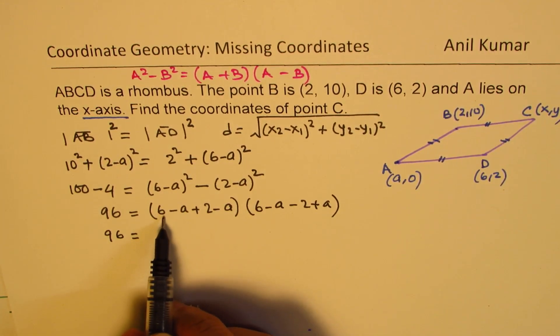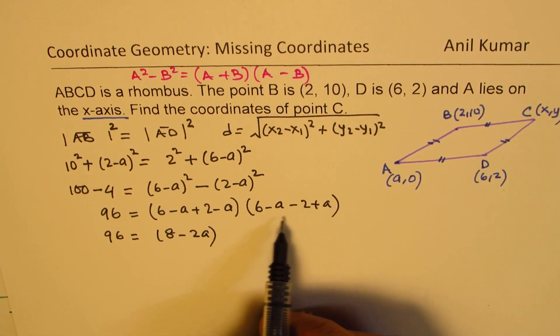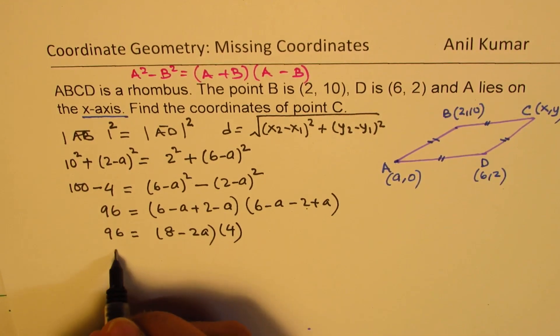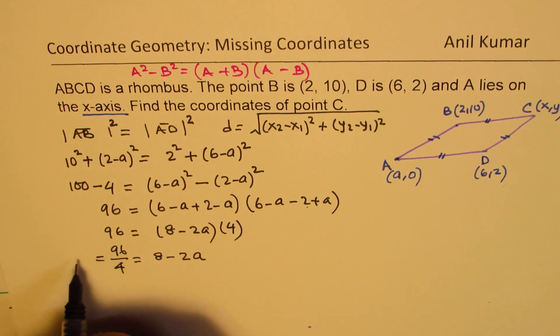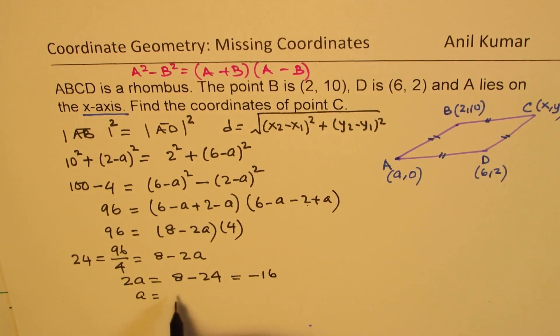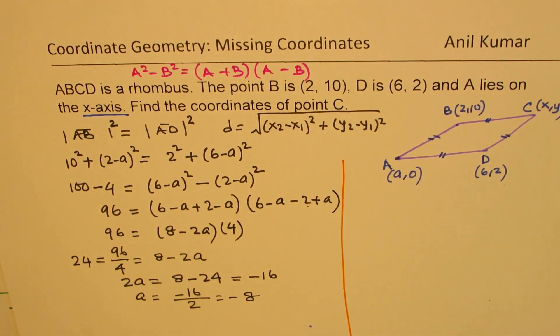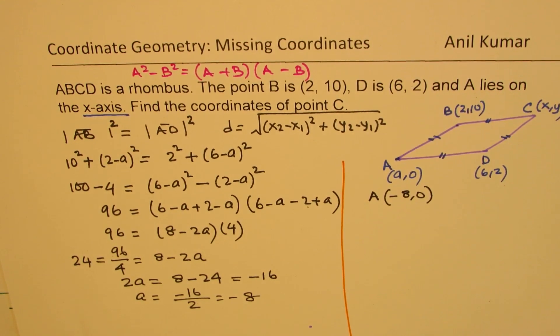So that is what it is. We can say 96 equals (6-A+2-A) times (6-2). This gives us (8-2A) times 4. So we can write this as 96 divided by 4 equals 8-2A. 96 divided by 4 is 24. So now we can solve for 2A equals 8-24. That gives us A as equal to (8-24) which is -16, so -16 by 2, which is -8. So we get the value of A as -8. So the coordinates for A are (-8,0).